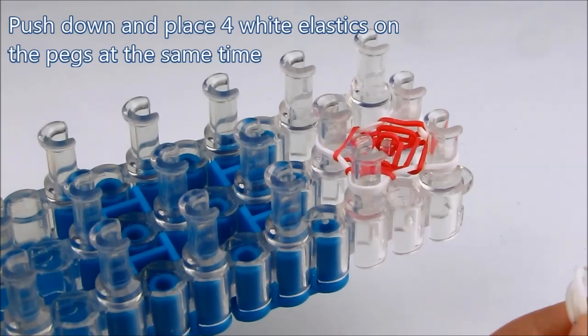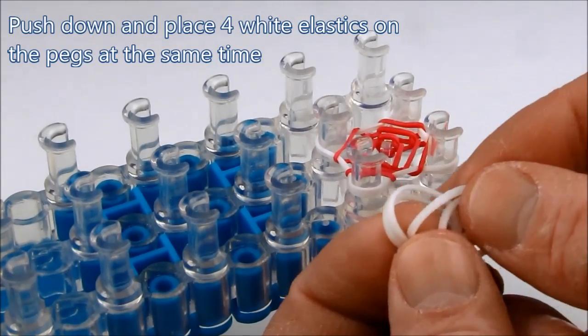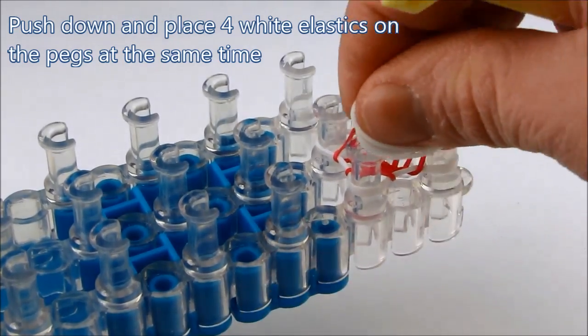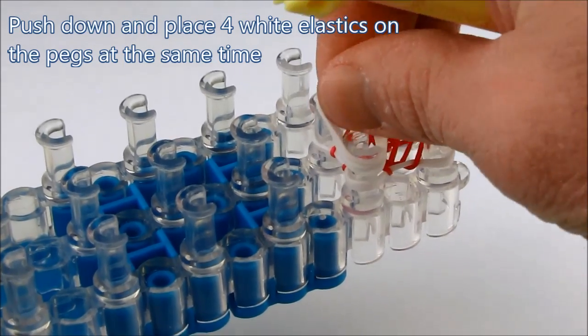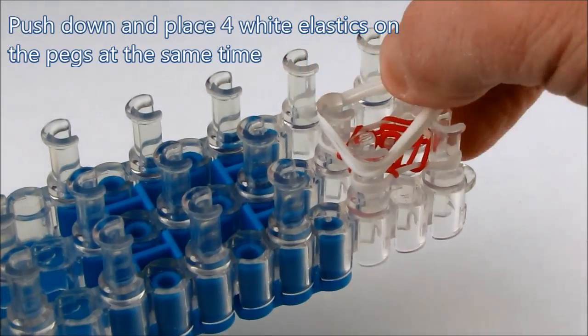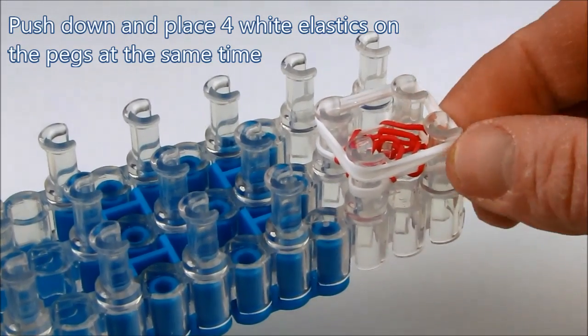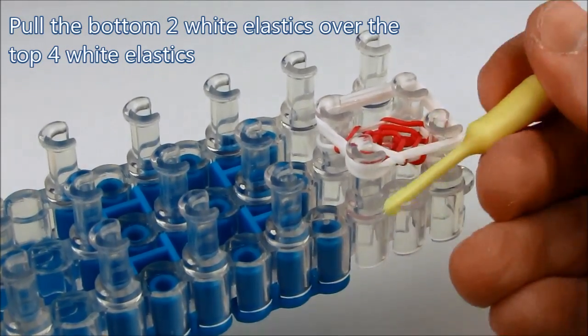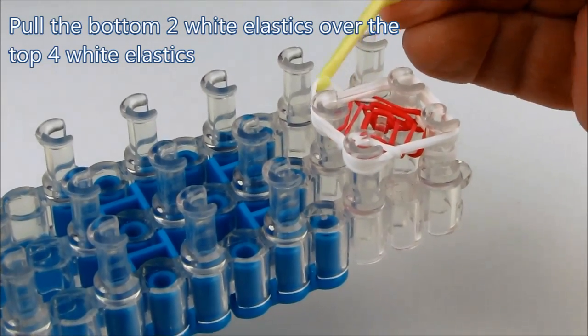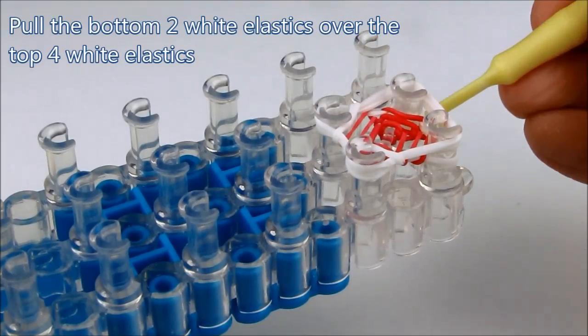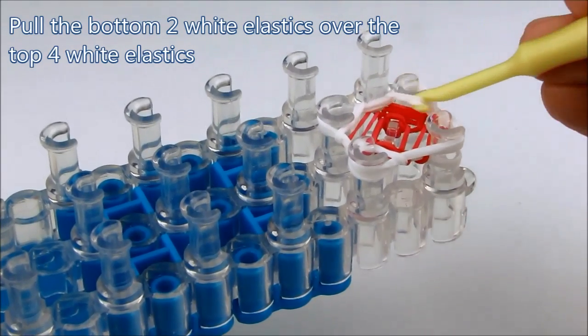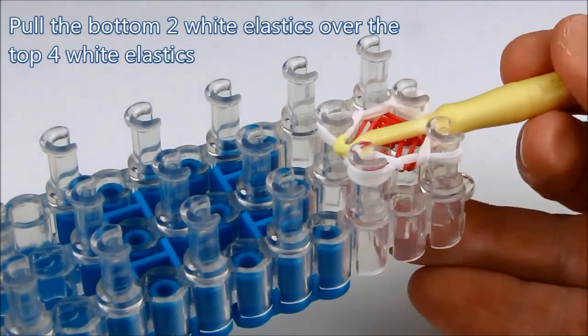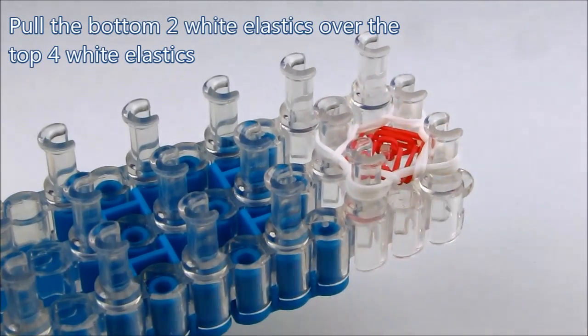And now we want to place four white elastics onto the pegs. Now pull the bottom two white elastics over the top four elastics on all four pegs. Push it down low onto the pegs.